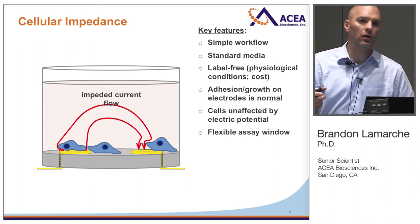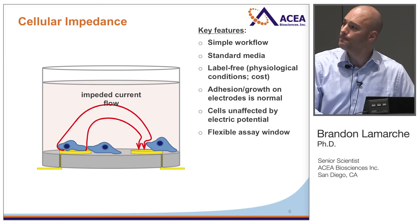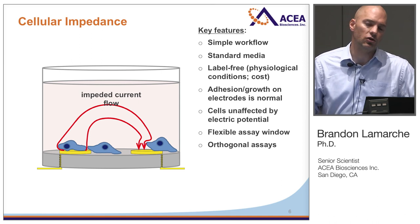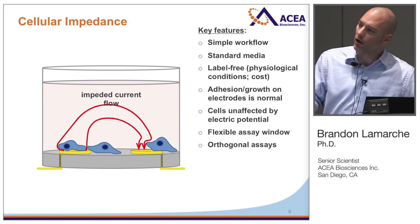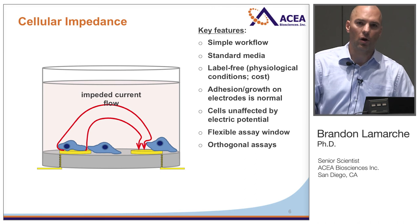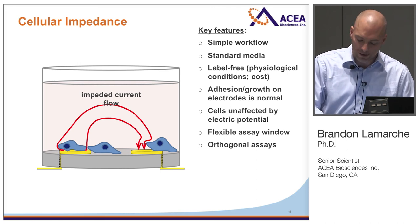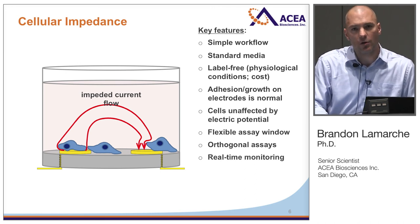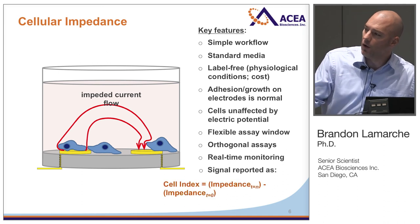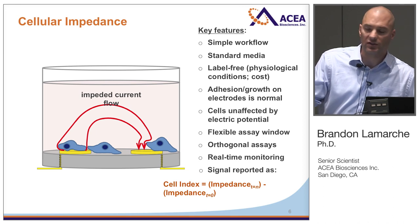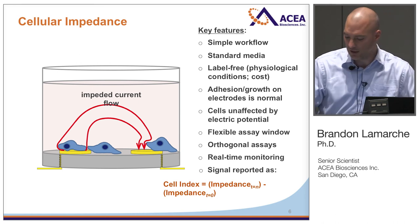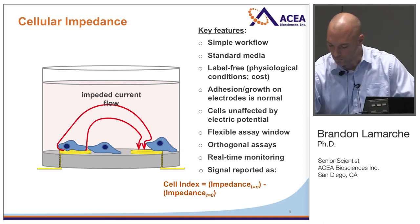There's a very flexible assay window: you can acquire data anywhere from minutes to days or weeks. The technology doesn't limit your assay window — what does is the biology you're trying to measure. The Excelligence assay does not damage the cells you're monitoring, so when you're done you can easily collect the cells and analyze them by Western blot, RNA sequencing, or whatever you're interested in. The system acquires data in real time, and what we plot at the end of the day is a parameter called cell index — the impedance at whatever time point you're interested in minus the impedance at t=0, prior to adding the cells.